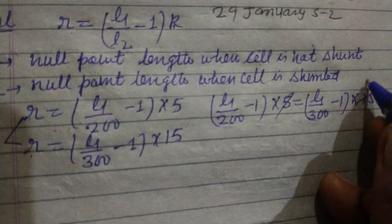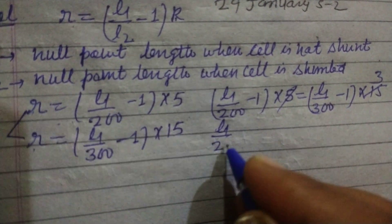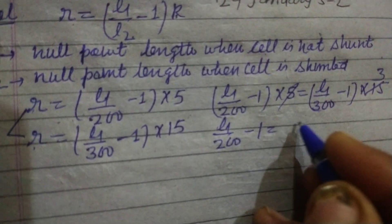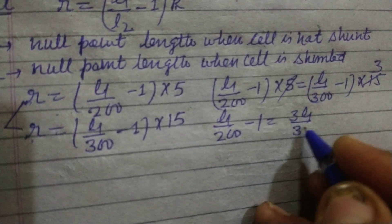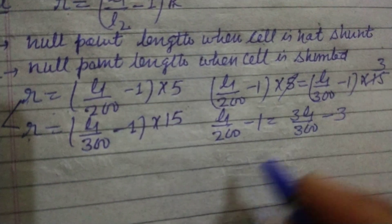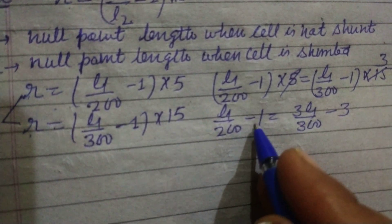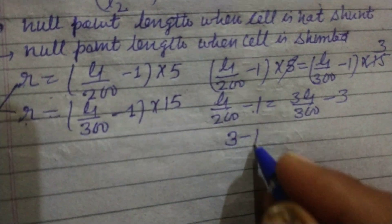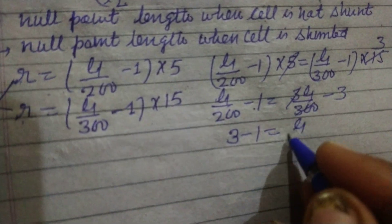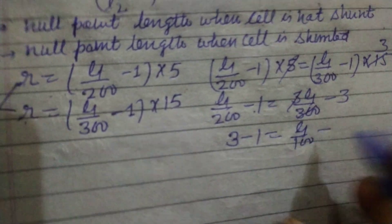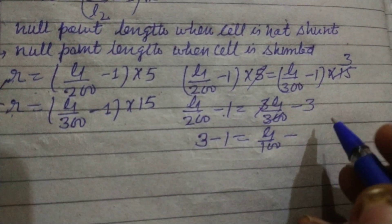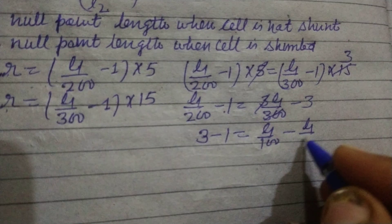Now we solve it: L1/200 - 1 = L1/300 - 3. So we bring 3 to this side: 3 - 1 = L1/100 - L1/200.